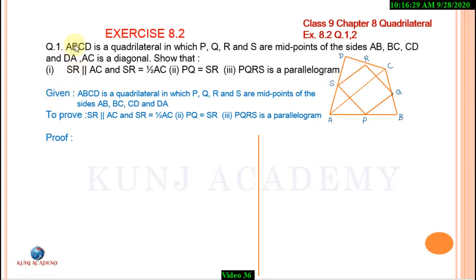We will write the Given and Proof sections. In triangle ACD, S is the midpoint of AD and R is the midpoint of side CD. Therefore, SR is parallel to AC and SR equals half of AC, by the midpoint theorem.